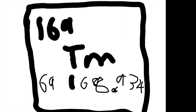So, if you know the number of protons is 69, then you gotta do math — you gotta do 169 minus 69 to find the number of neutrons. And you get 100 neutrons.